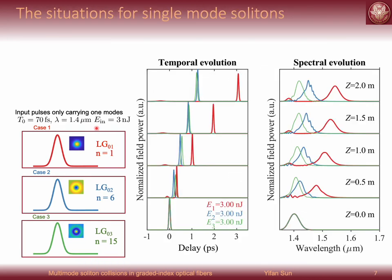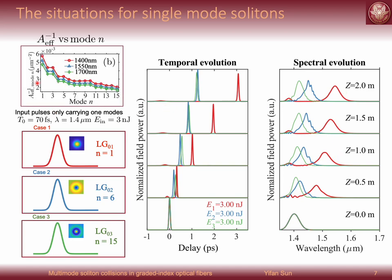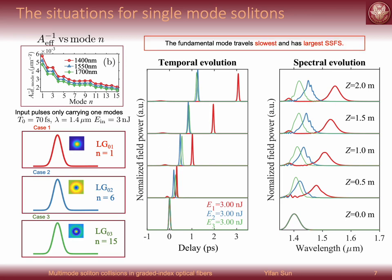Here are the situations for the single-mode soliton cases. I just increase input energy up to 3 nJ. So we see the first point is in spectral domain, the soliton carrying the fundamental mode has the largest redshift. And this makes sense if we plot the reciprocal value of the effective area of those modes, which are proportional to the nonlinear parameter. Here the fundamental mode has the largest value. So even these three cases have the same input energy, but the fundamental mode exhibits largest nonlinearity. This leads to the largest redshift. Another point is in temporal domain, here the group delay of these cases is contrary to the linear cases as I showed before. Soliton carrying the fundamental mode propagates slowest. Now we understand that nonlinearity can modify the group velocity of those pulses.